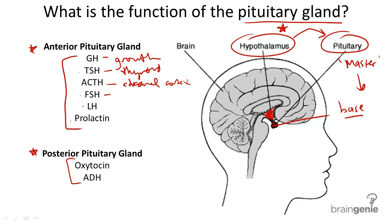Follicle stimulating hormone causes ova to mature in females, and in males will stimulate the testes to make sperm. Luteinizing hormone stimulates the ovaries to produce a corpus luteum, which you may learn about when studying the female reproductive system. In the male, luteinizing hormone stimulates the testes to make testosterone.